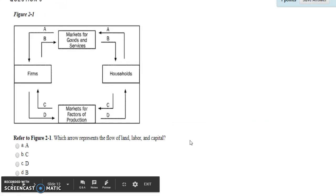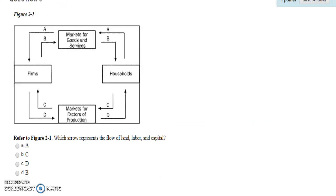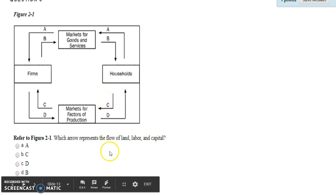Question five: Which arrow represents the flow of land, labor, and capital? Households produce and own land, labor, and capital. Therefore C represents the flow of land, labor, and capital, and the answer is B.